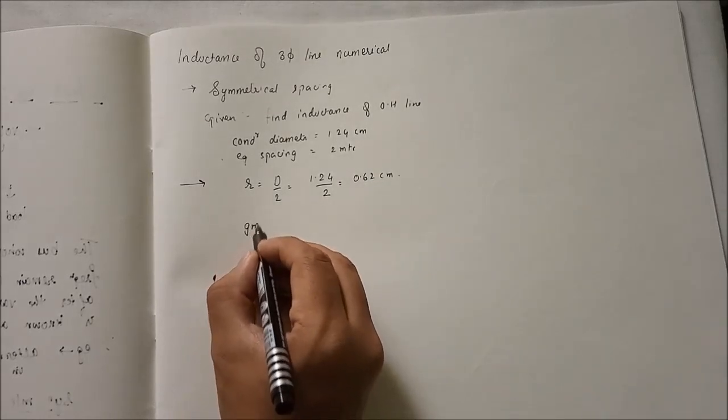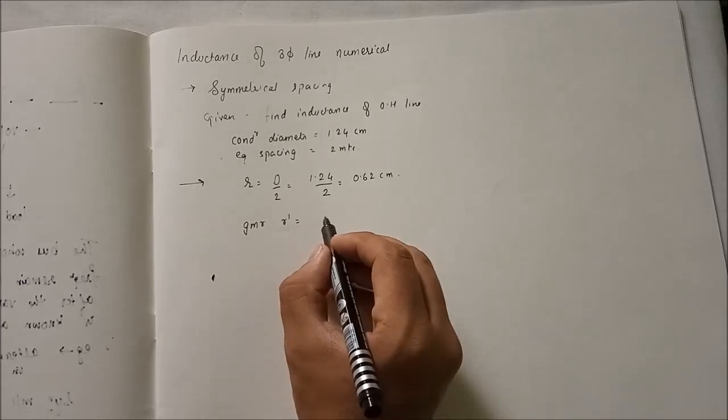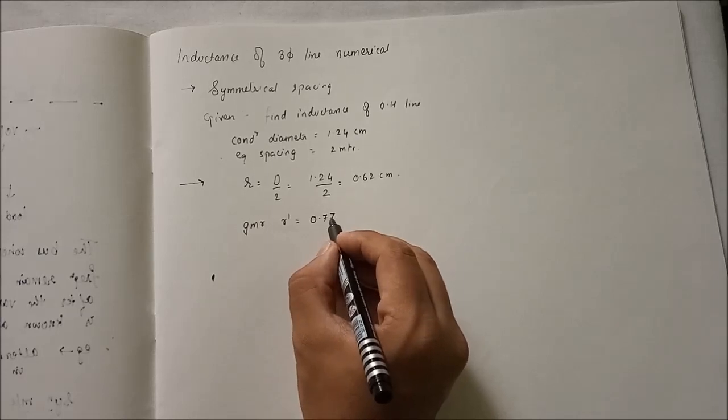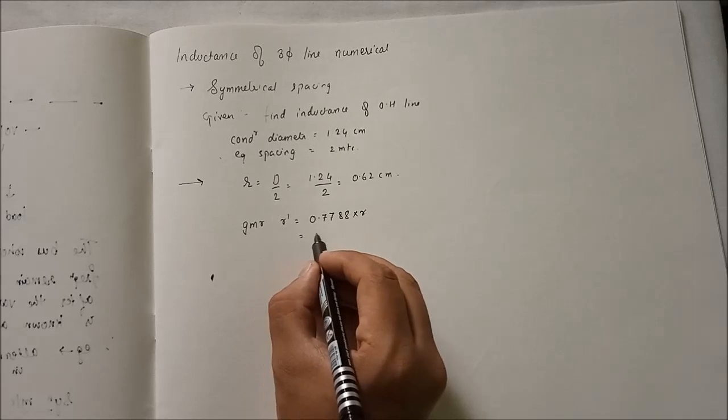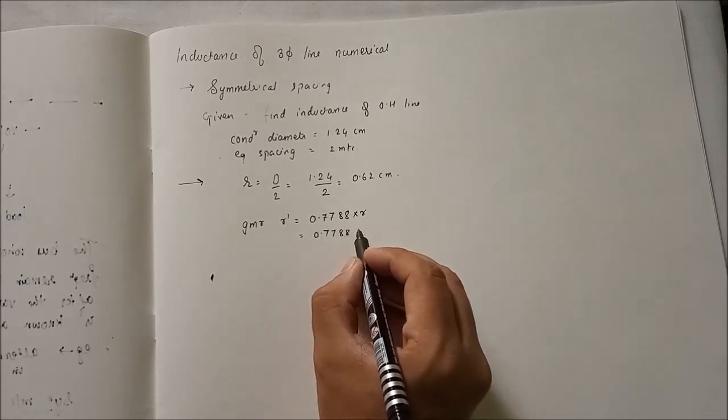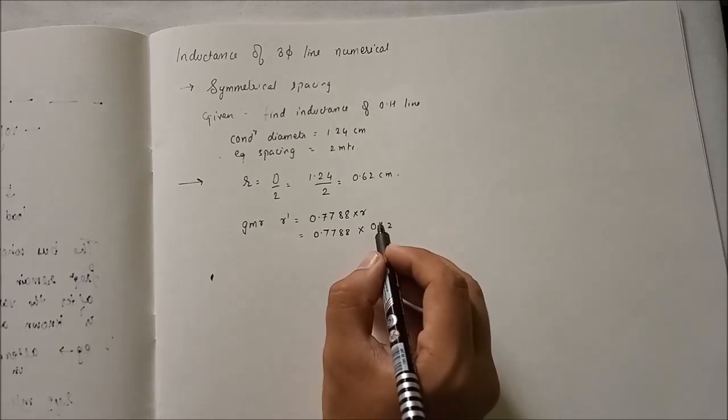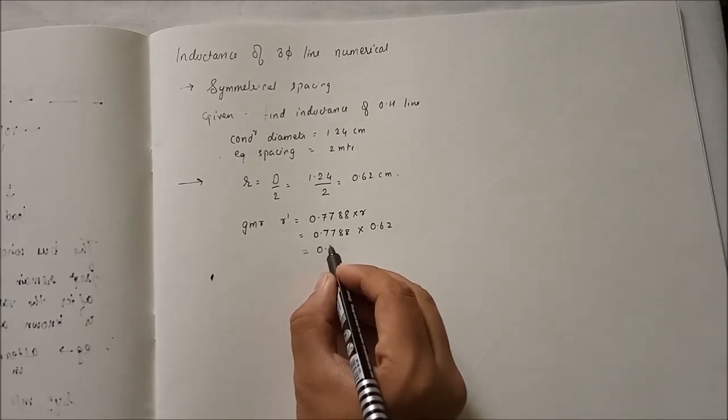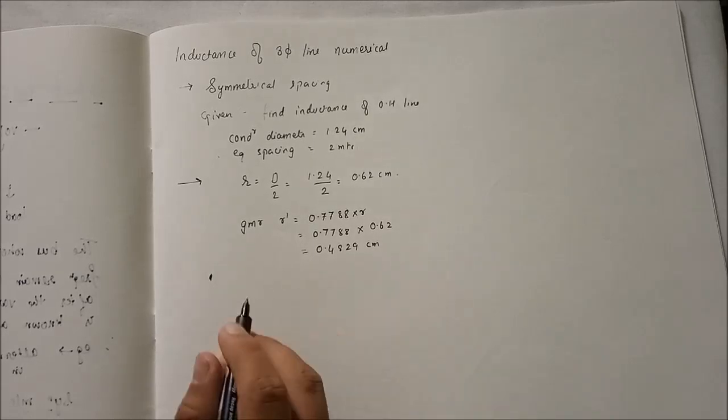Next we will find the GMR, geometrical mean radius. R prime is equal to, it is a formula, 0.7788 into R, which is equal to 0.7788 into 0.62. So this will be equal to 0.4829 cm.